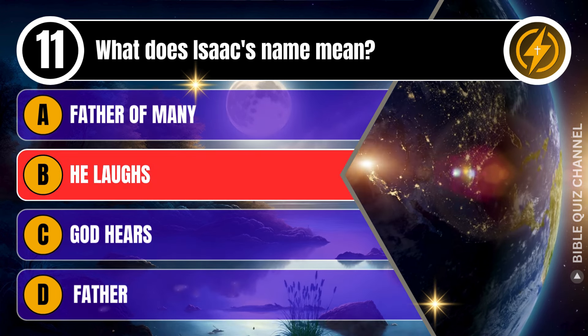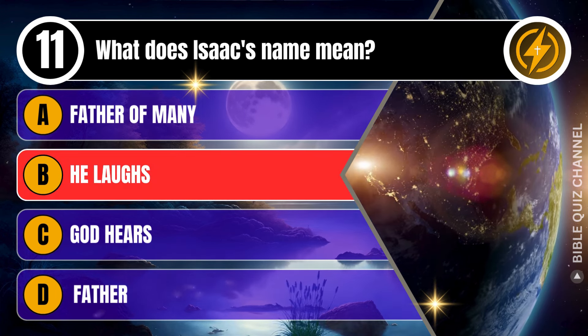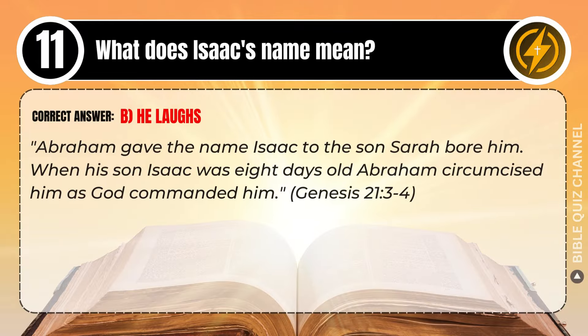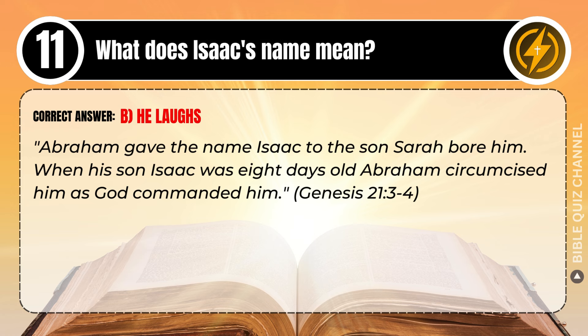Correct answer: B. He laughs. Explaining the Bible — Abraham gave the name Isaac to the son Sarah bore him. When his son Isaac was 8 days old, Abraham circumcised him, as God commanded him. Genesis, chapter 21, verse 3 to 4.